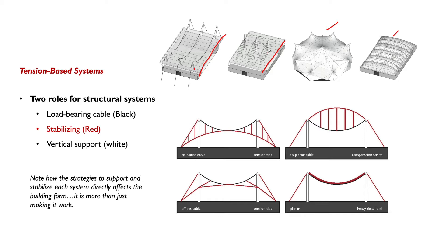What are those elements? Looking cross-sectionally, there's always a load-bearing element in a tension-based system — the cable, shown in black. To correspond with the cable, you always need a stabilizing set of tension wires or other elements. The red here shows stabilizing wires — whether using struts hanging down below, a stabilizing cable above, pulled back, or just a heavy amount of weight. The strategies to support and stabilize each system directly affect the building form — it's more than just making it work.